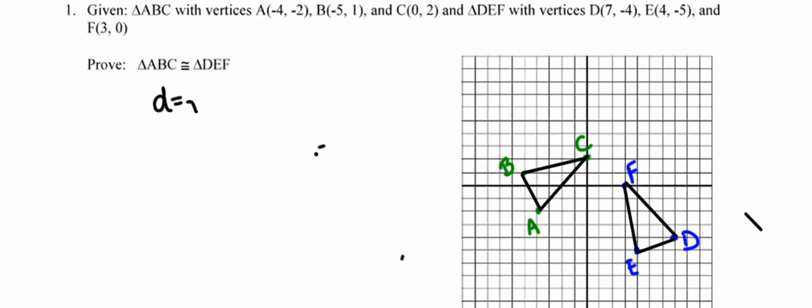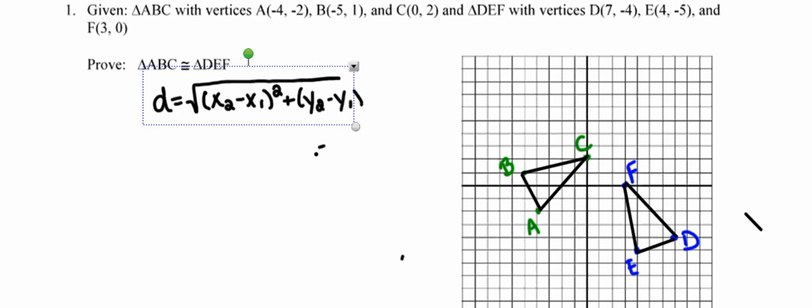The formula that allows me to find the length of each side of the triangle is the distance formula. Anytime I'm going to use a formula, I of course need to write the formula down on my paper. Now I'm going to get busy and get down to work. I'm going to find the length of each side of the green triangle and the length of each side of the blue triangle. I'll start with my green triangle.